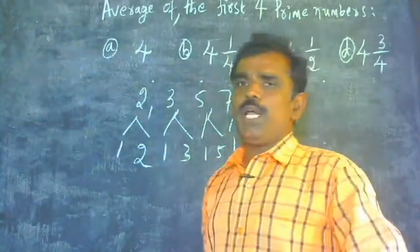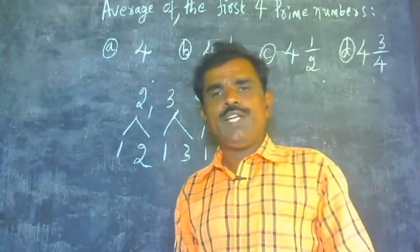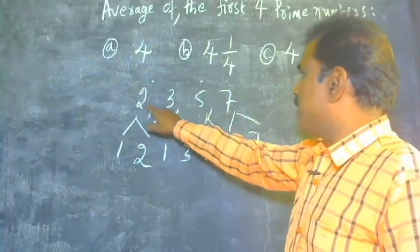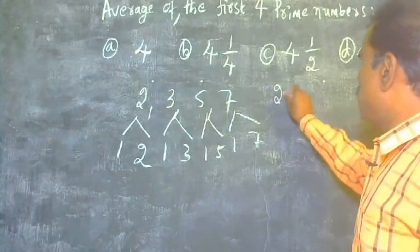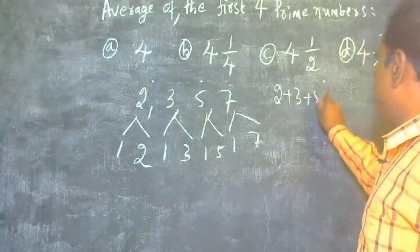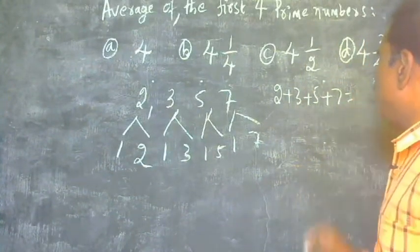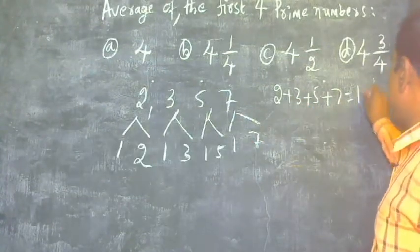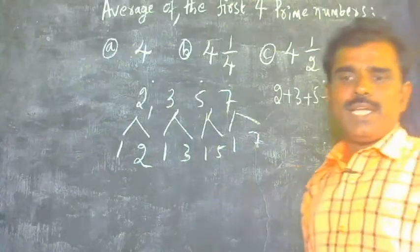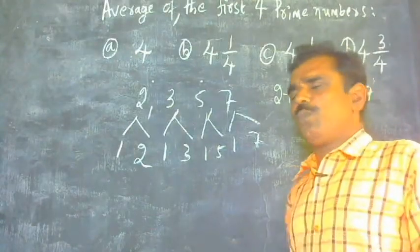Here, we have to find out the average of these 4 numbers. So, let us take the sum: 2 plus 3 plus 5 plus 7 is equal to 7 plus 5, 12, 12 plus 3, 15, 15 plus 2, 17. Sum of the first 4 prime numbers.